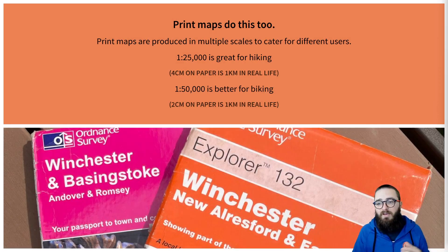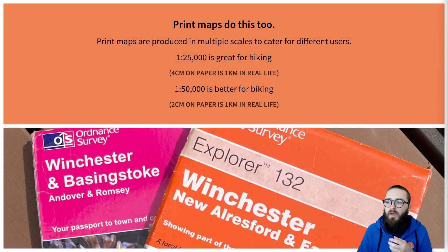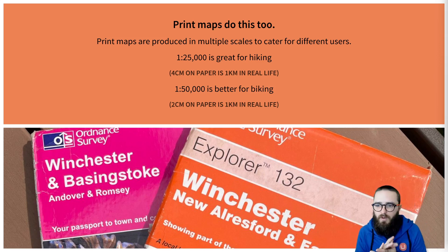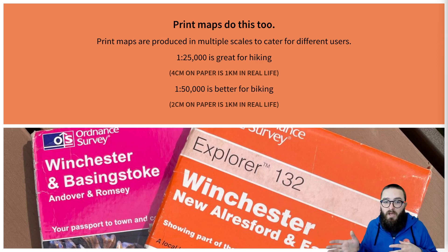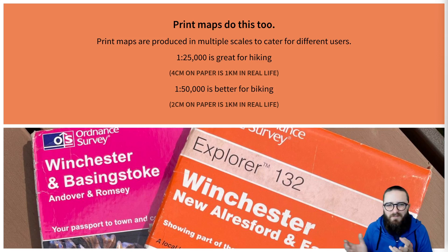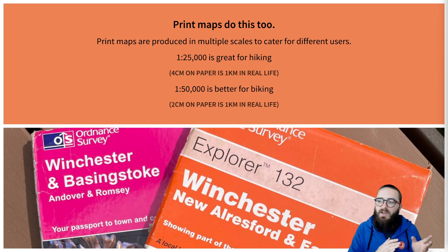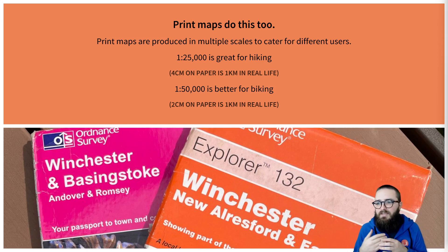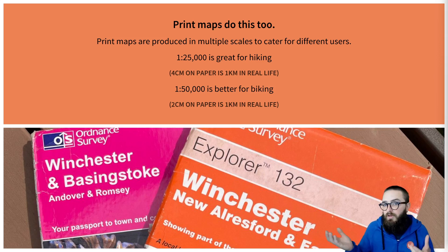Print maps do exactly the same thing. Ordnance Survey release several scales of map, each with different levels of detail. The 1:25,000 scale — where 4 centimetres on the map is one kilometre in the real world — is commonly used by hikers so they can see the intricacies of tiny crossing footpaths. If you're cycling, however, you can travel so far in a day that a 1:25,000 scale map is fairly useless to you. So then you might use a 1:50,000 scale map, where two centimetres on the page is one kilometre in the real world.